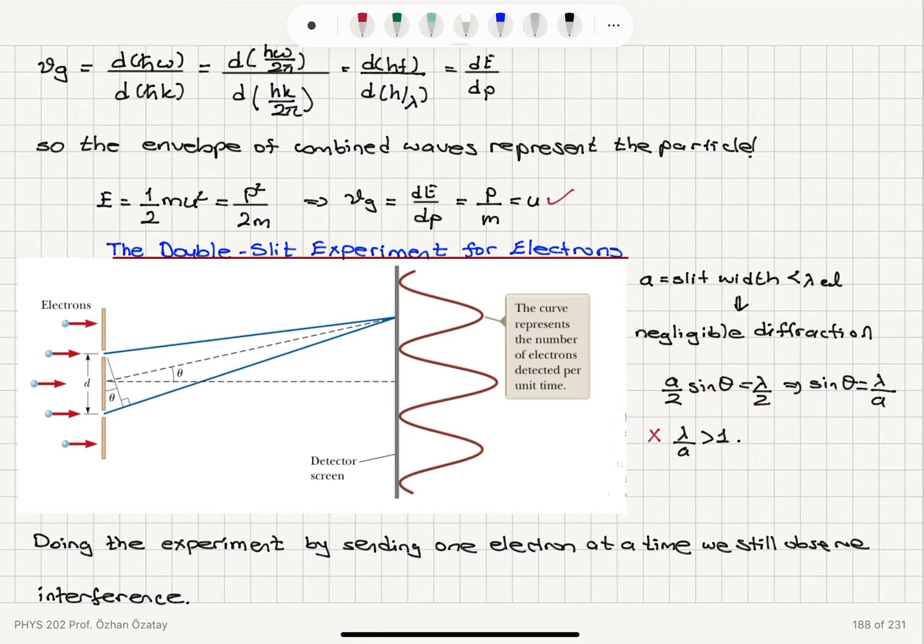So a over 2 sine theta equals lambda over 2, the condition for the diffraction, first diffraction minimum, is going to give us sine theta is lambda over a.